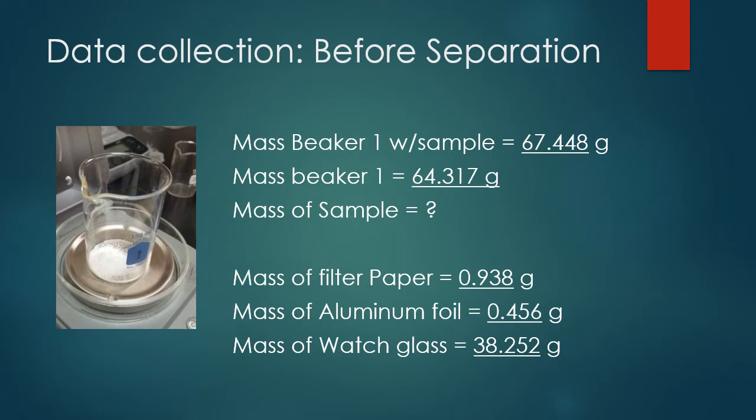Now for the data collection. Before the separation, we take a mixture of unknown quantities that contains silicon dioxide, sodium chloride, and calcium carbonate. We're going to set beaker one on the balance and add approximately three grams of the unknown. When beaker one has the unknown in it, the total mass of the beaker with the solid is 67.448 grams. How do you figure out the mass of the sample?